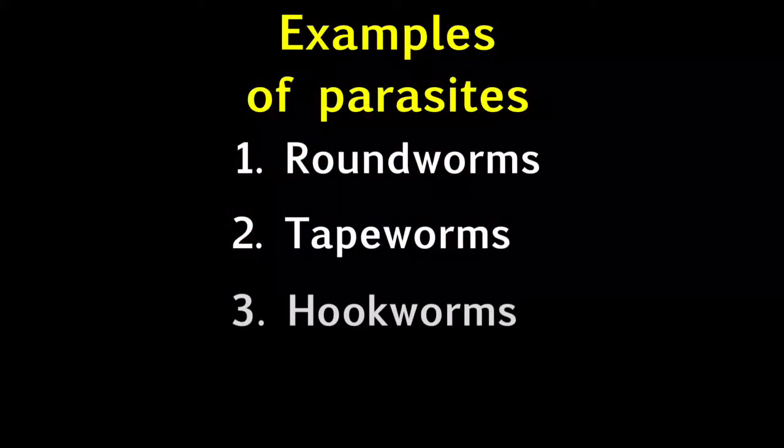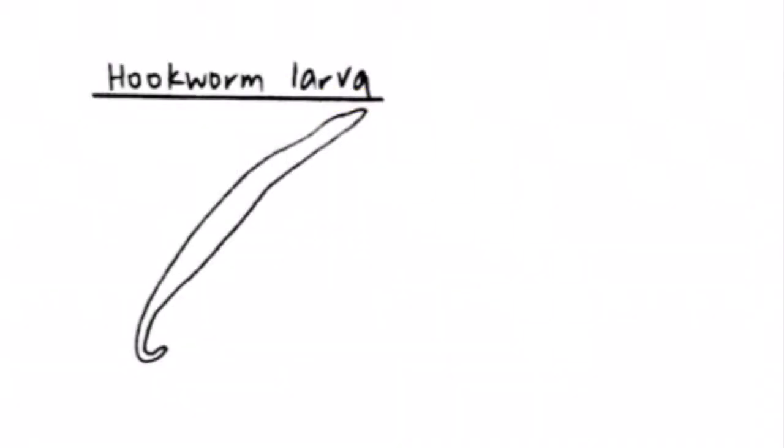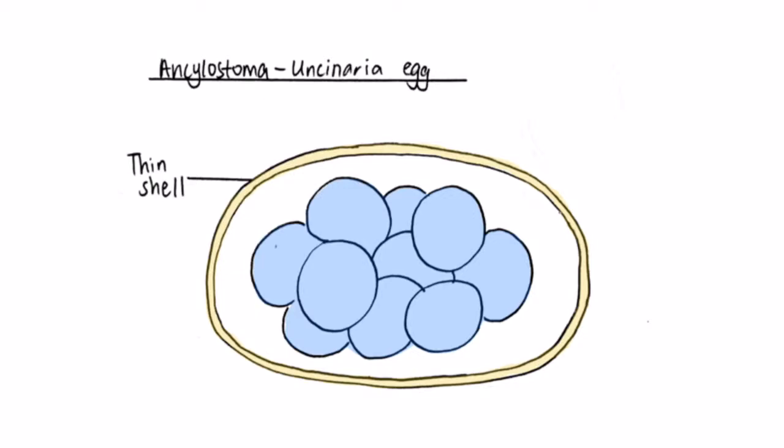Thirdly, for hookworms, this is the structure of the larva. There are two common kinds, which are Ancylostoma and Uncinaria, and they can both be found in cats and dogs as well. Hookworm eggs are ovoid-shaped and they have thin sidewalls.